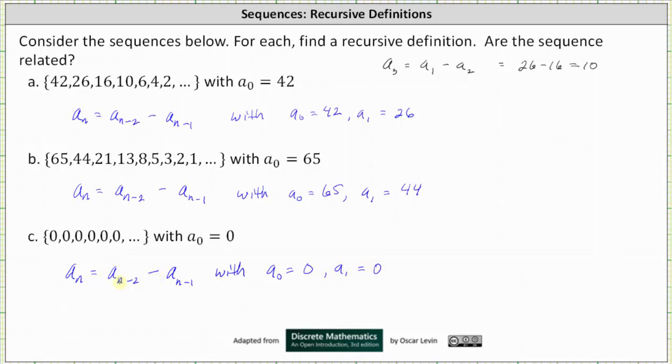Of course, we could also give a lot of different recursive definitions for a sequence of zeros. But in this case, notice how we can define the recurrence relation as the same for all three. So they are somewhat related because all three sequences do have the same recurrence relation, but they're also different because the initial conditions are different.